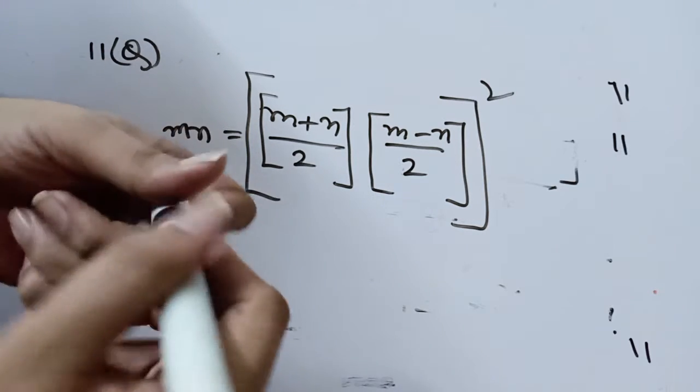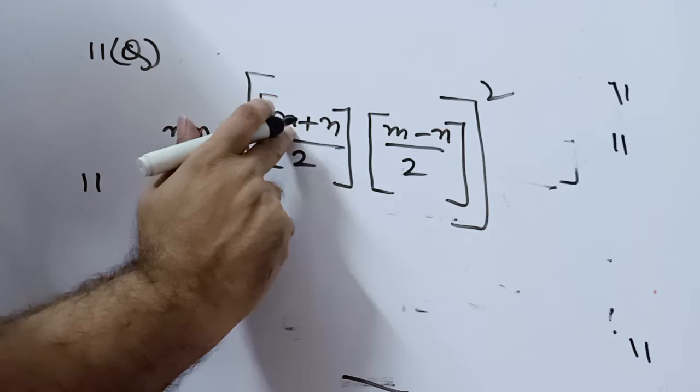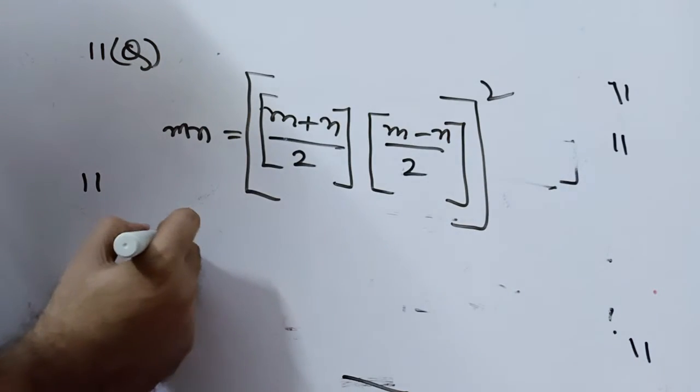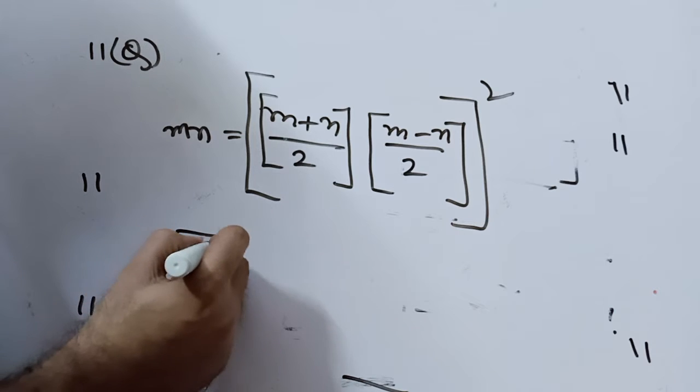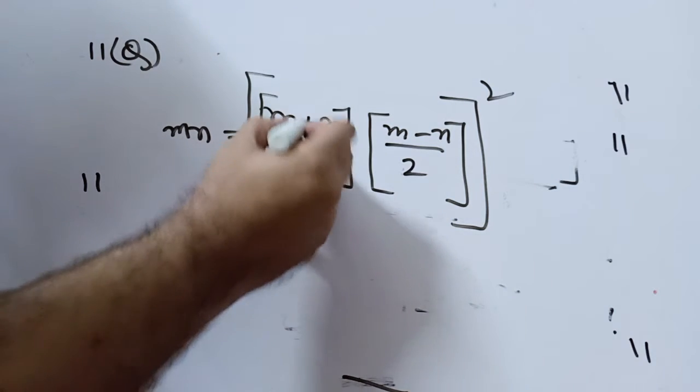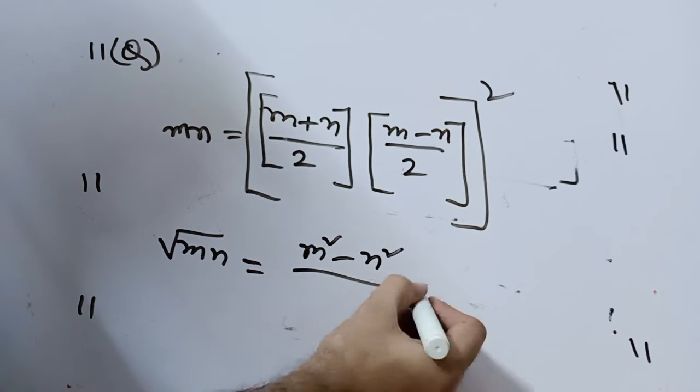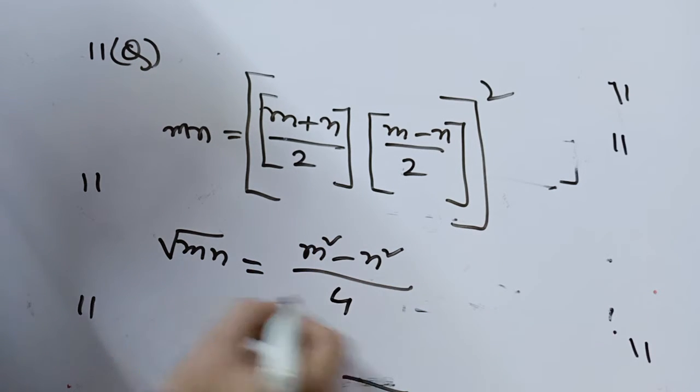I will clear this. This is again of the form a plus b into a minus b. When I remove the square, I get root mn. Here, m plus n into m minus n is m square minus n square, whole divided by 4.